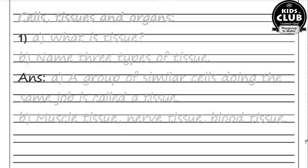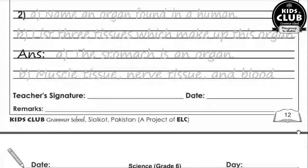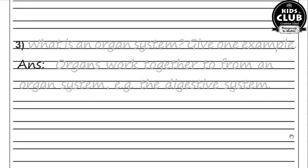Question number two: Name an organ found in a human and list three tissues which make up this organ. The stomach is an organ. Muscle tissue, nerve tissue, and blood tissue make up the stomach. Question number two: What is an organ system? Give an example. Organs work together to form an organ system — for example, the digestive system.